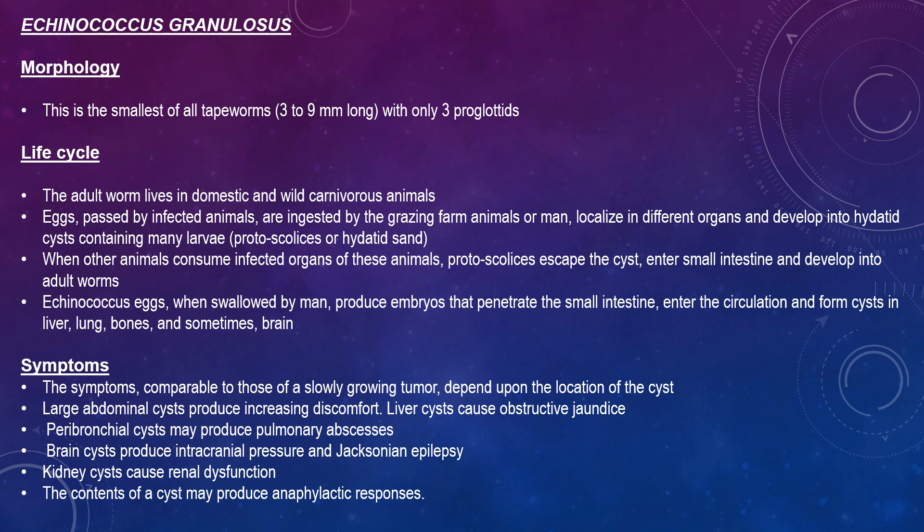When other animals consume infected organs, protoscoleces escape the cysts into the small intestine and develop into adult worms. Echinococcus eggs, when swallowed by man, produce embryos that penetrate the small intestine into the circulation and form cysts in the liver, lung, bones, and brain. The cyst is round and measures 1 to 7 cm in diameter, although it can grow up to 30 cm. The cyst consists of an outer anuclear hyaline laminar layer and an inner nucleated germinal layer containing clear yellow fluid. Daughter cysts attach to the germinal layer, although some cysts known as brood cysts may only have larvae and hydatid sand. Man is a dead-end host.